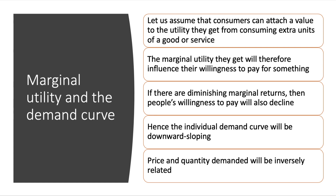The marginal utility they receive will therefore influence their willingness to pay for something. If there are diminishing marginal returns, then willingness to pay will also decline. Hence the demand curve for a product will be downward sloping — price and quantity demanded will be inversely related.